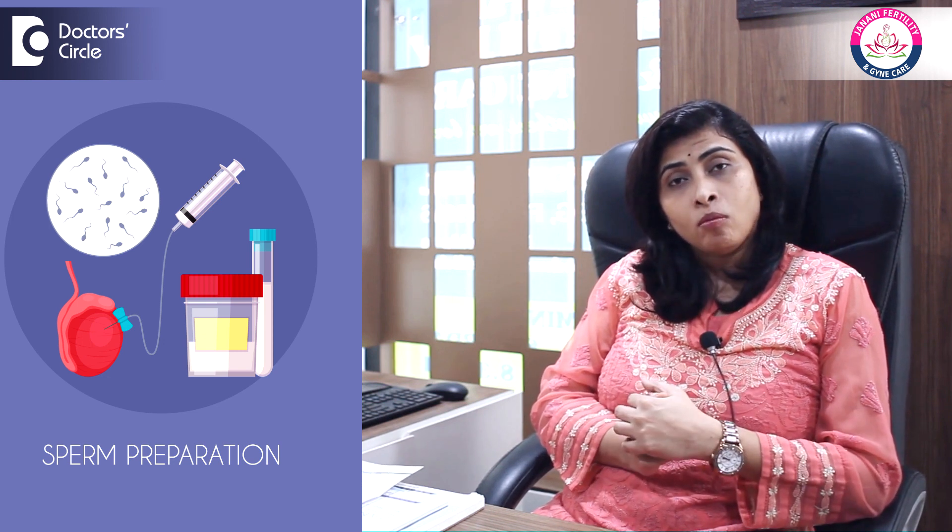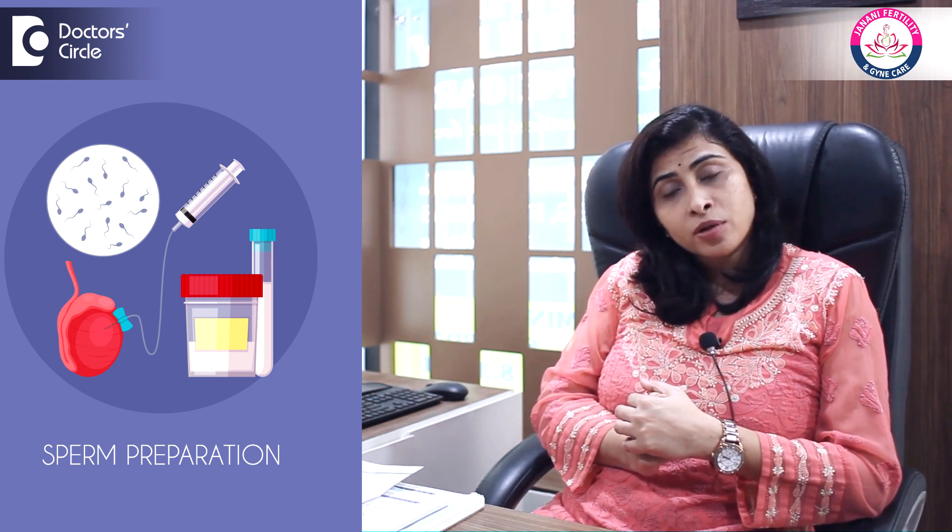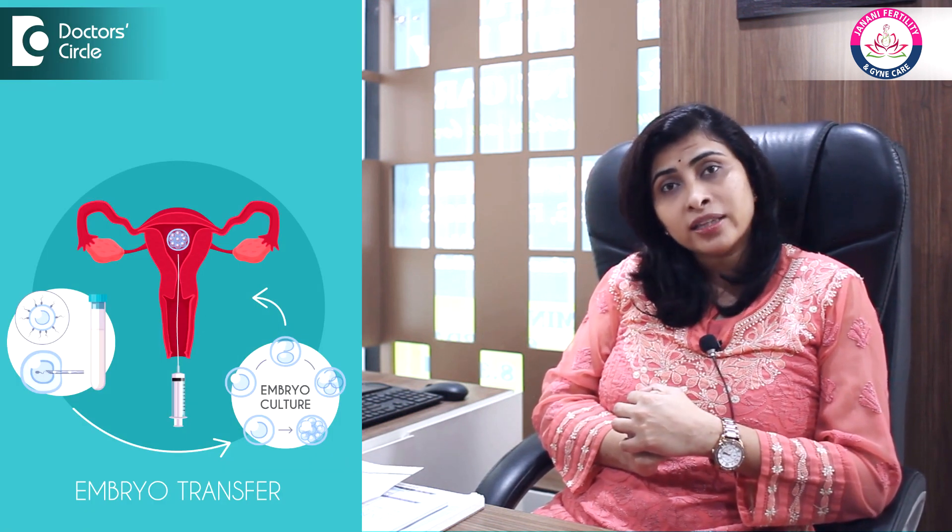In IVF, when the number of eggs is less, there is something called egg pooling, wherein we do a couple of cycles of IVF. For example, if you have only one follicle, we start giving injections for that follicle to grow and do an egg pickup, mix with the husband's sperm, make an embryo, and freeze it. Then we do one more cycle of IVF. In this way, we continue until we get two to three embryos, and then transfer the embryos — which gives around 50 to 60% chance of pregnancy.